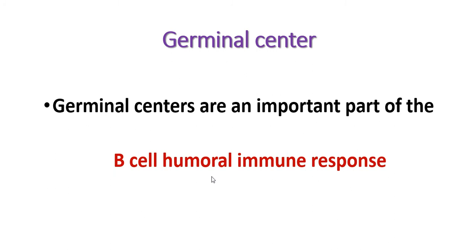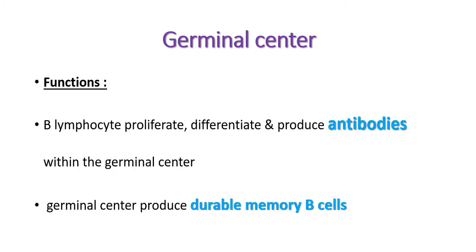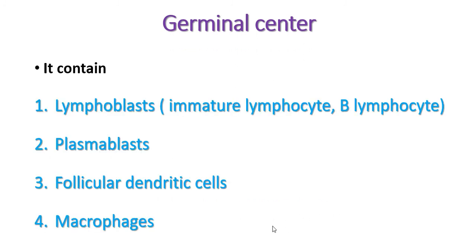Germinal centers are an important part of the B cell humoral immune system. B lymphocytes proliferate, differentiate, and produce antibodies within the germinal center. The germinal center also produces durable memory B cells.